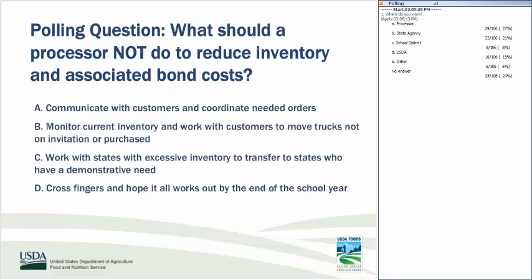Polling question: What should a processor NOT do to reduce inventory and associated bond costs? Options: communicate with customers and coordinate needed orders; monitor inventory and work with customers to move trucks not on inventory or invitation or purchase; work with states with excessive inventory to transfer to states with demonstrated need; or cross your fingers and hope it works out before end of school year. About 50% answered option C, but all options A, B, and C are correct — D is the only incorrect answer.